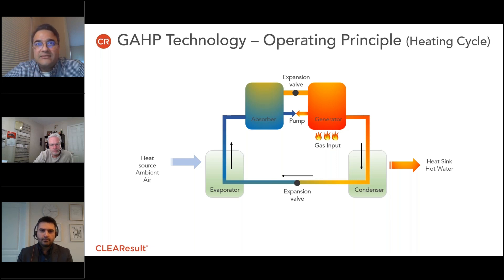But the main difference from an electric heat pump or an air conditioner is that there's no compressor here. Instead, there's a generator and an absorber at the top of the cycle, as you can see here.